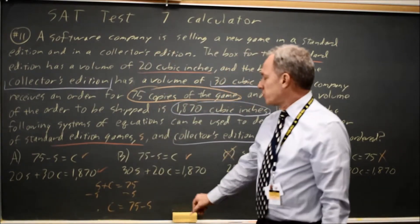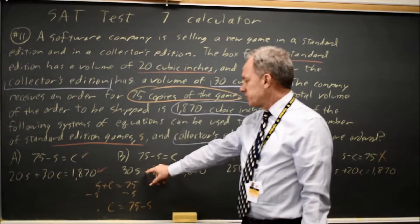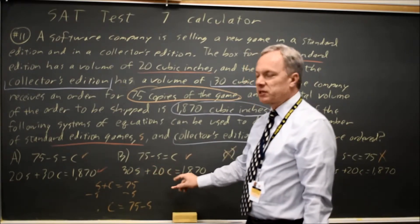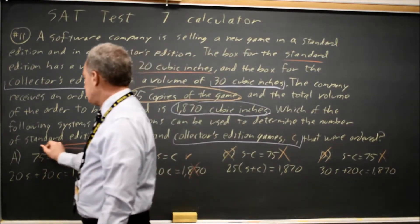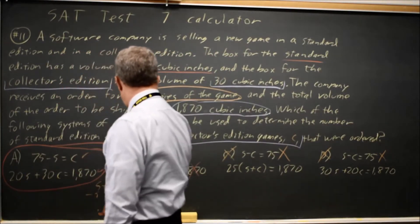Choice B paired the volume for the collector's edition with the number of standard and the volume of the standard with the number of collector editions, so that would be wrong. The correct answer is choice A.